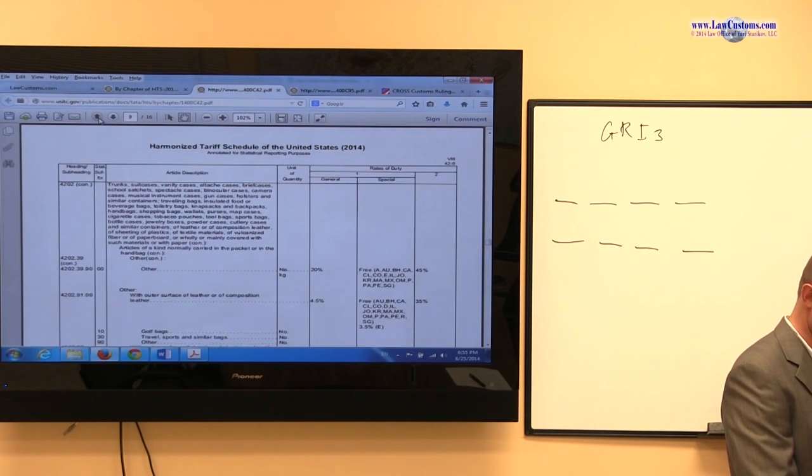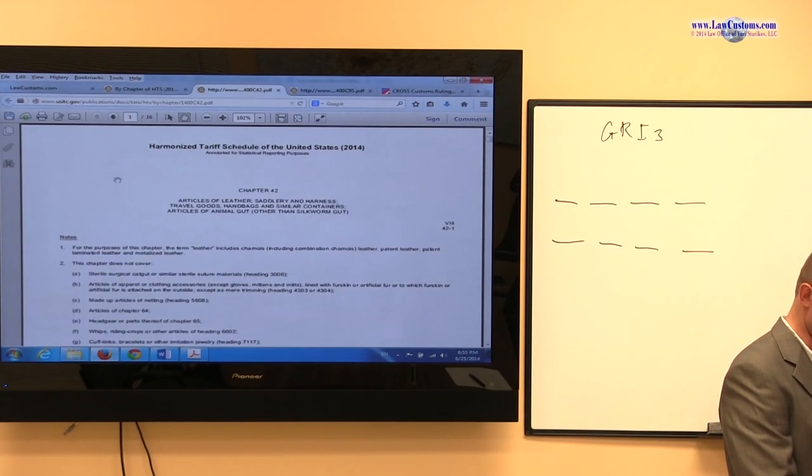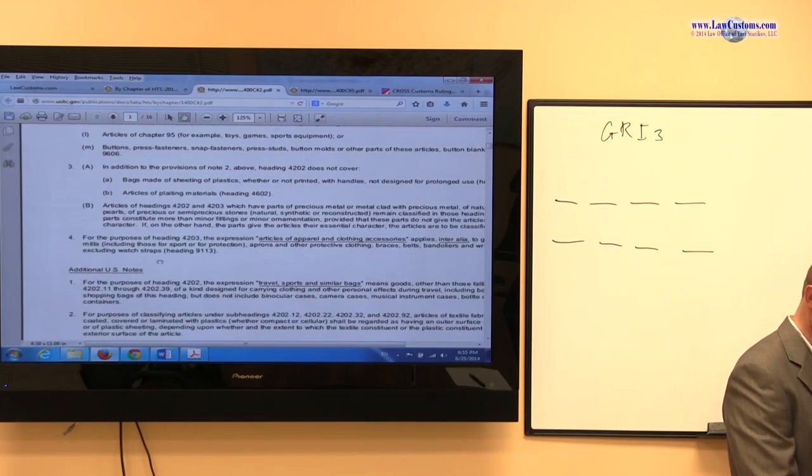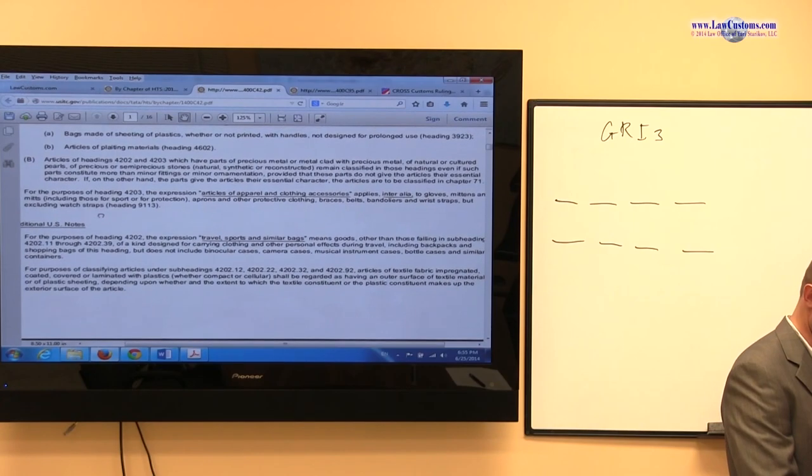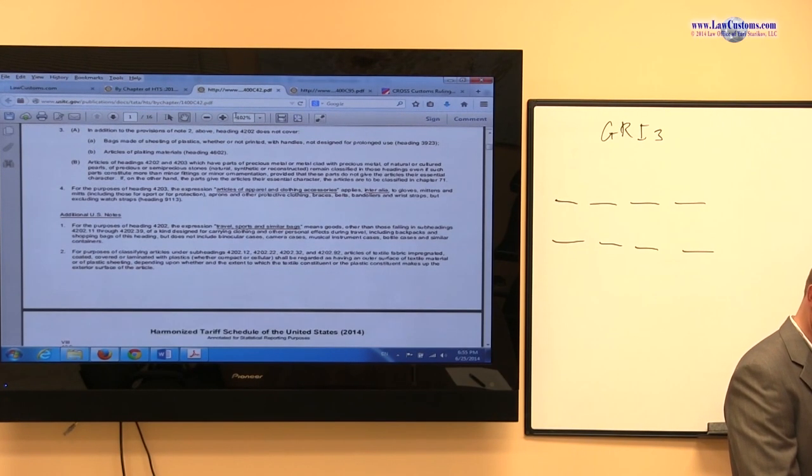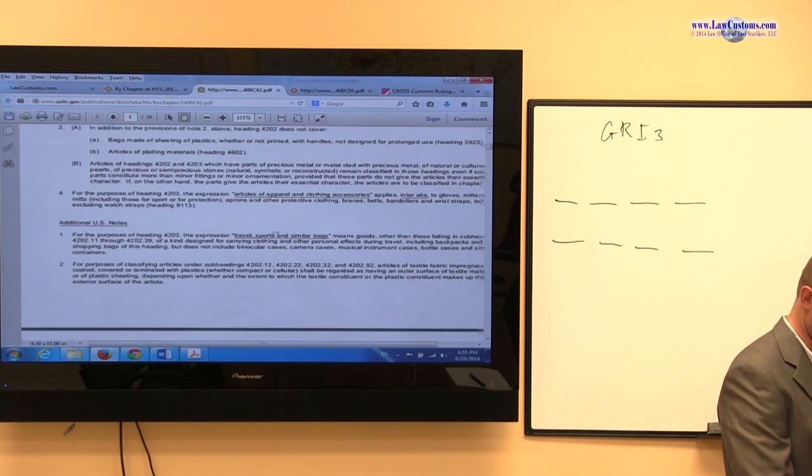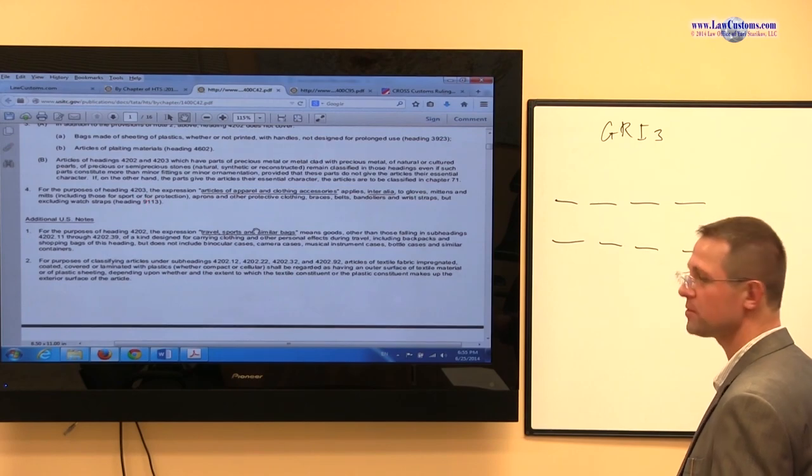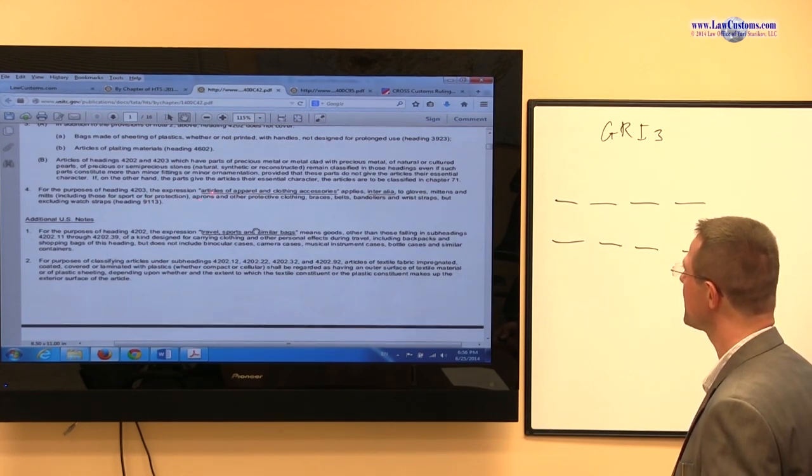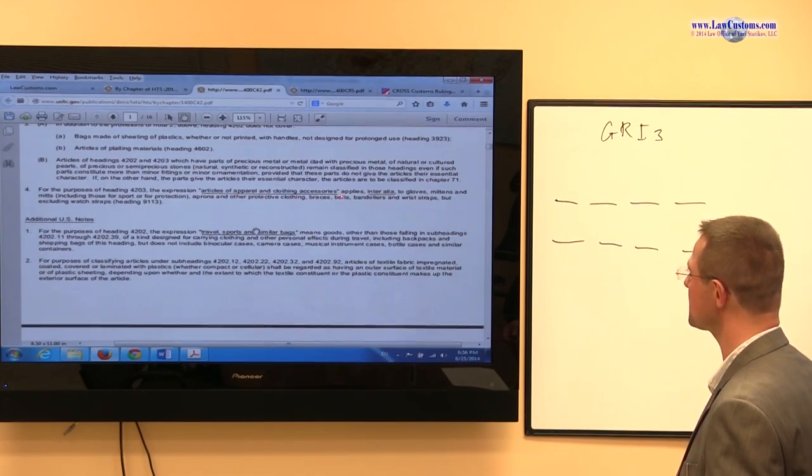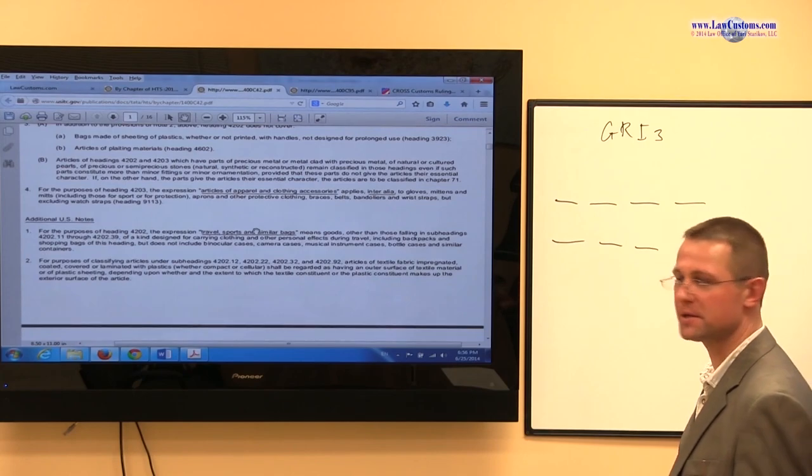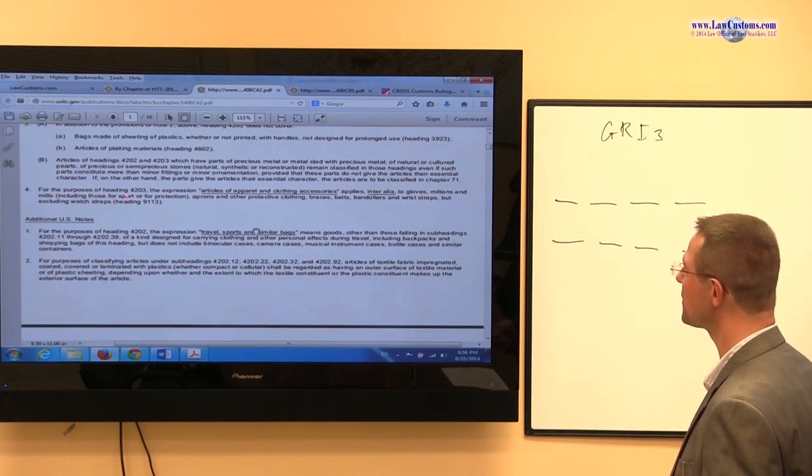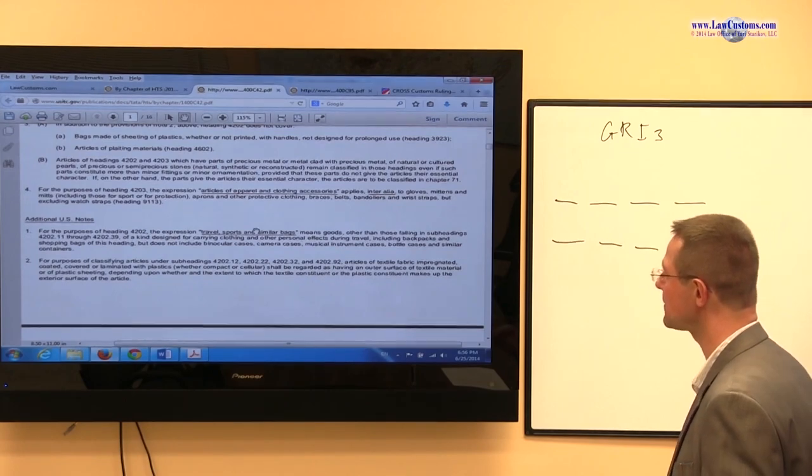So chapter 42, let's go way to the beginning of the chapter. And we have notes here. And chapter note 4 for chapter 42 has the following statement. I'll try to enlarge it so it's visible. Let's take a look. For purposes of heading 4203, which is one of the suggested headings, the expression articles of apparel and clothing accessories, which it does say in 4203, applies to gloves, including those for sports or for protection. Well, that takes care of it right there.